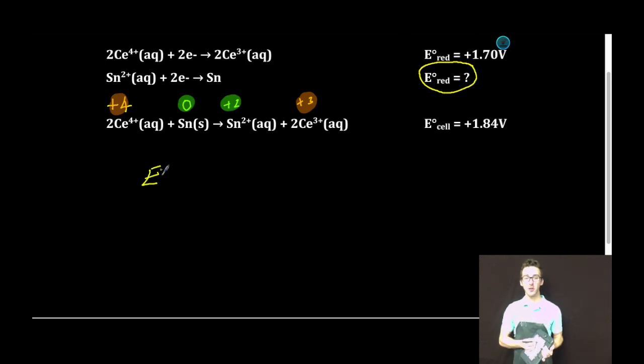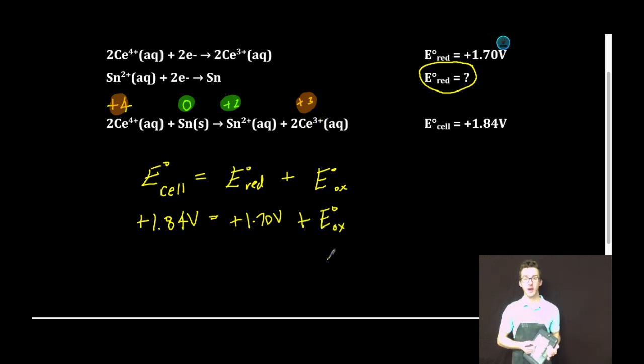Remember that the cell potential is equal to the reduction potential plus the oxidation potential. I know this one. I know that the cerium is the thing that's being reduced because in my equation, it goes from plus four to plus three oxidation state. A quick subtraction will tell me that the oxidation potential of tin is positive 0.14 volts.